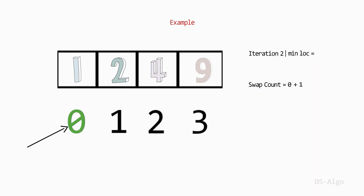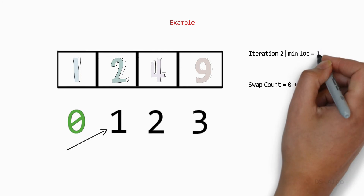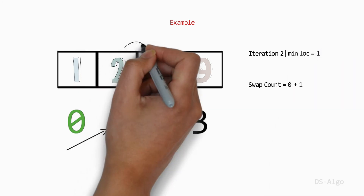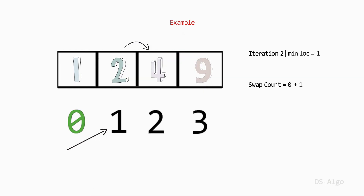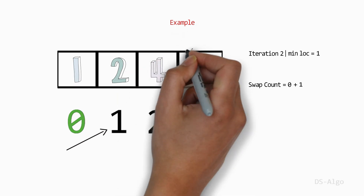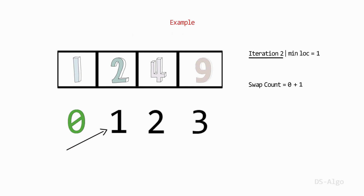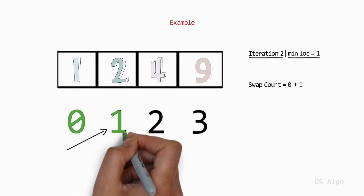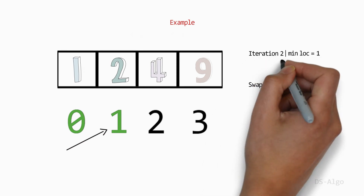Let's begin with the second iteration, which starts from index 1. Therefore, we assign minLoc to 1. Now compare the element at index 1 with the next element. The element at index 2 is not less than the element at index 1 — that is, 4 is not less than 2 — so no need to update minLoc. Now compare the element at index 2 with the next element. The element at index 3 is not less than the element at index 2 — that is, 9 is not less than 4 — so no need to update minLoc. The second iteration is complete and we have not found a new minLoc, as it remains the same as its initial value of 1. So there is no need to swap or increase the swap count.